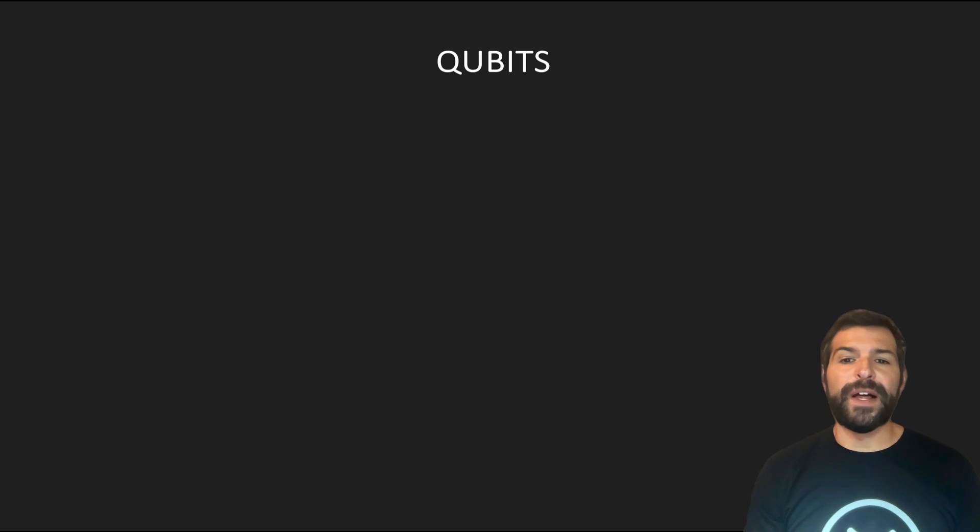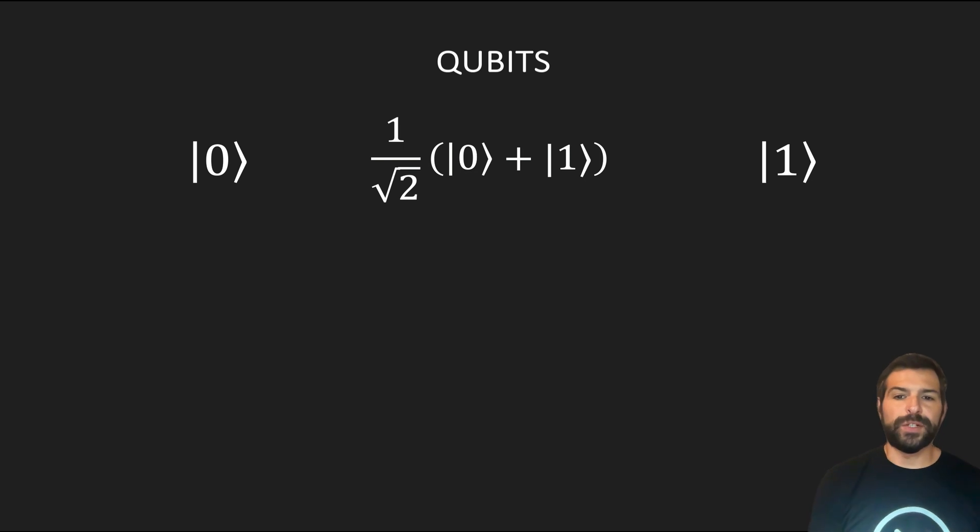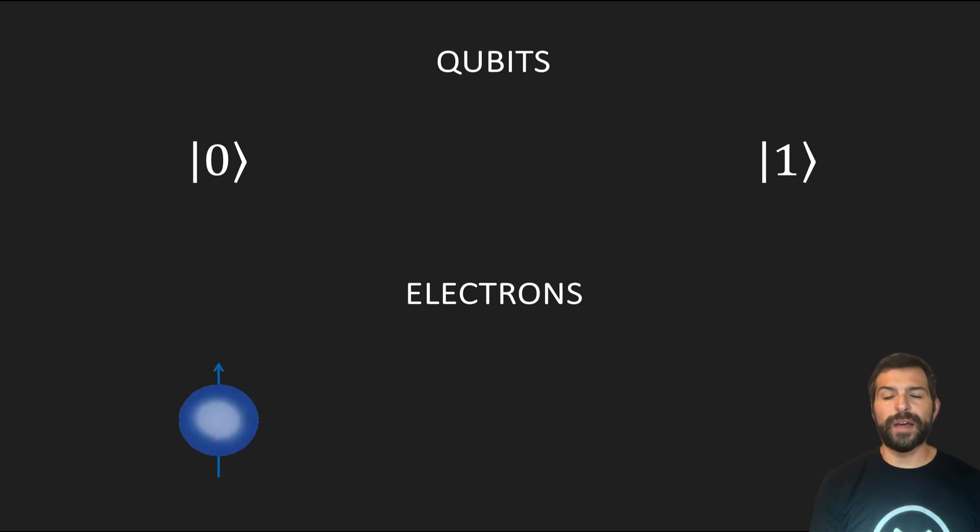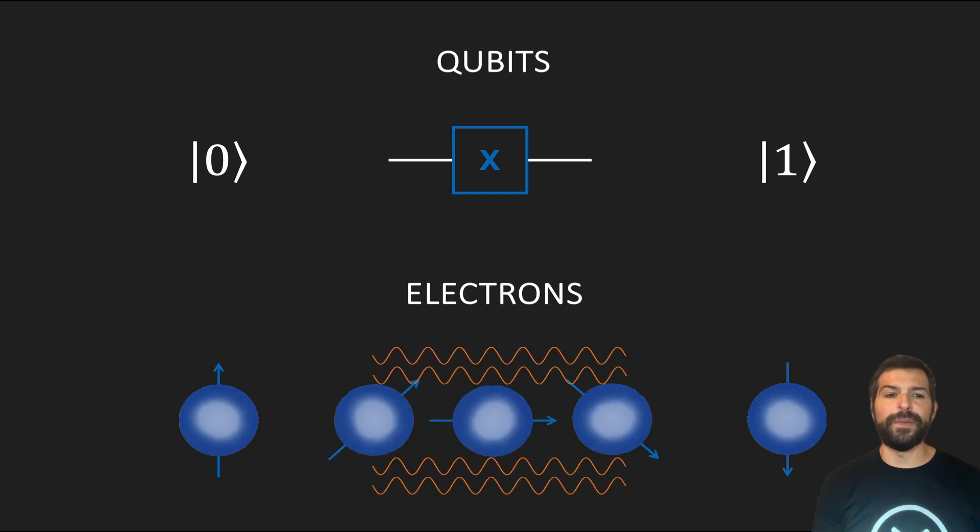Qubits can take either a value of 0, 1, or a superposition of 0 and 1. So a concrete implementation of a qubit could be, for example, the spin of an electron, which would take a value of 0 when we have spin up, or a value of 1 when we have spin down. And then we have quantum gates, which basically represent unitary evolutions of our qubit. So in the case of our electron, this would correspond to electromagnetic waves capable of changing the spin of the particle.